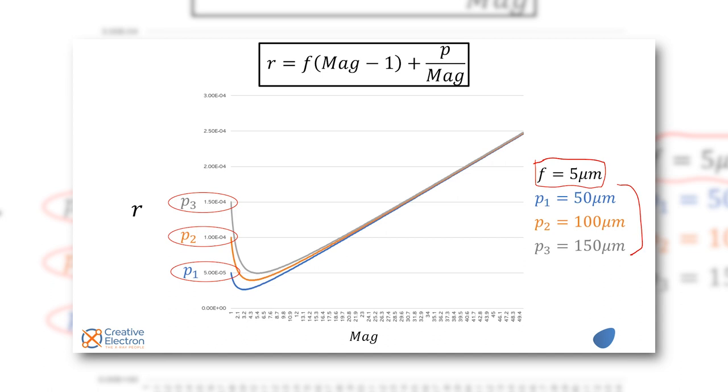Exactly what it shows here, the influence of pixel size shows up on the low mag. As magnification increases they converge toward each other and there's really not much difference.